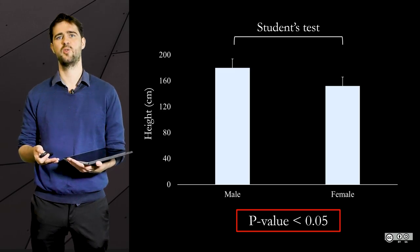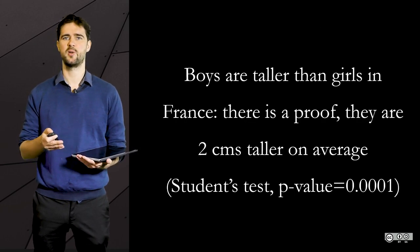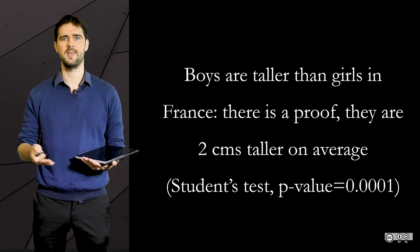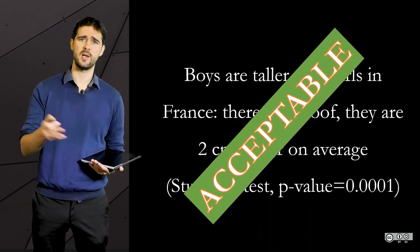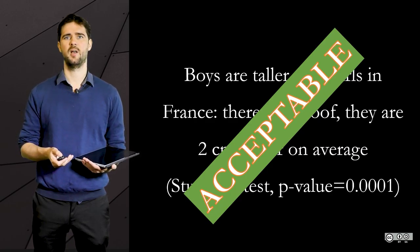So if you perform a student's test and that you obtain a p-value of 0.001, yes, there is a statistically significant difference between boys and girls. But if we get 0.1, what do we do? Is there some sort of threshold?